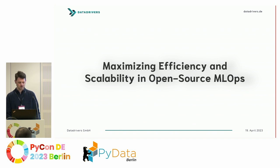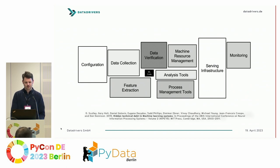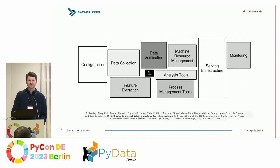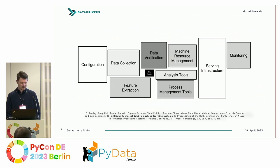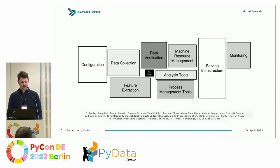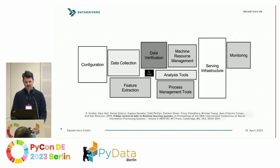I want to kick things off with a graphic that came out in 2015 in a paper called 'Hidden Depth in Machine Learning Systems.' Who knows this and has already seen this before? To me it's a very seminal paper, already eight years old now. The point the authors made was that if you want to put machine learning into production, there's very little that is only about machine learning — you see this small black box that's your ML code.